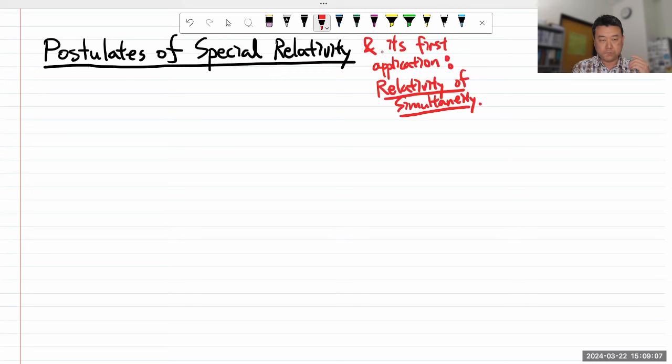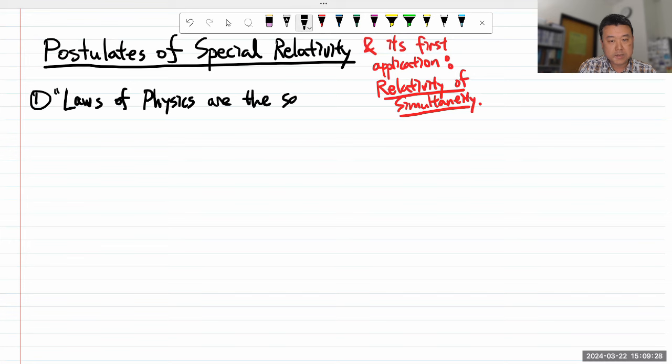So before we got to this point, we talked about the first postulate of Special Relativity, which one might call the Principle of Relativity. That is, laws of physics are the same in all inertial reference frames. And you might call this Principle of Relativity.